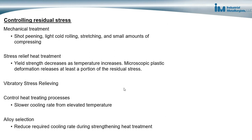Through alloy selection, when heat treating metals for strengthening, we can select alloys that enable slower cooling rates during the strengthening heat treatments. Slower cooling rates allow for more uniform temperatures throughout the component, less temperature non-uniformity, and as a result, less residual stress in the metal.